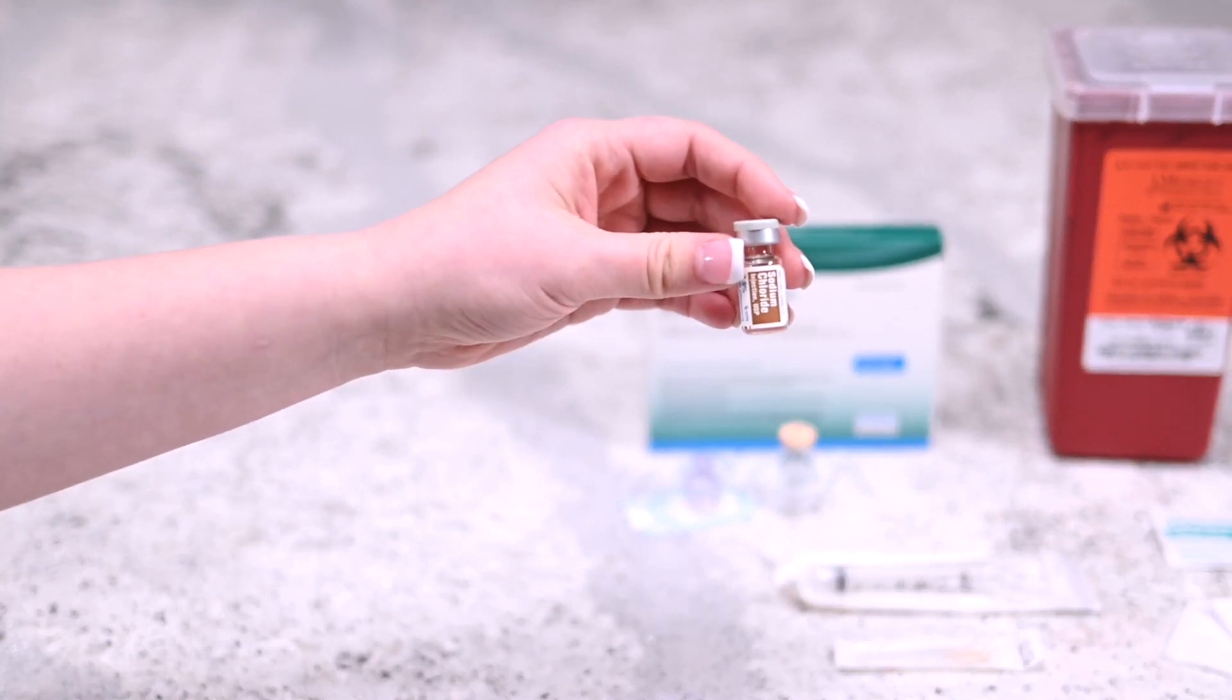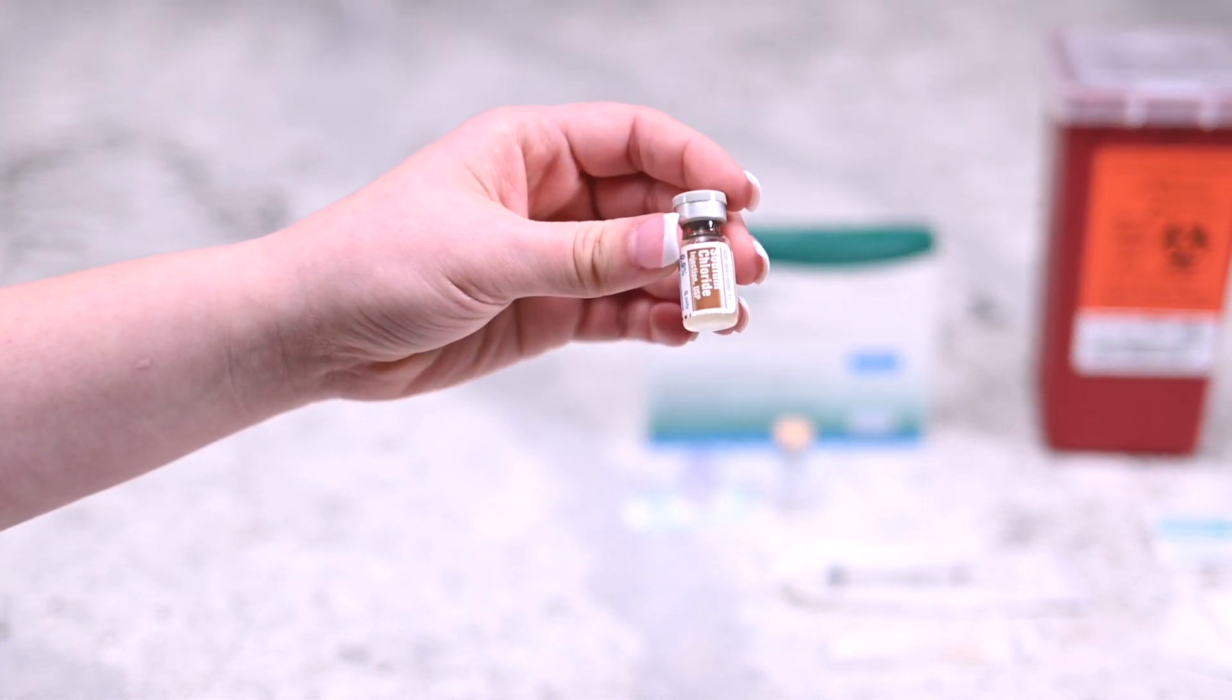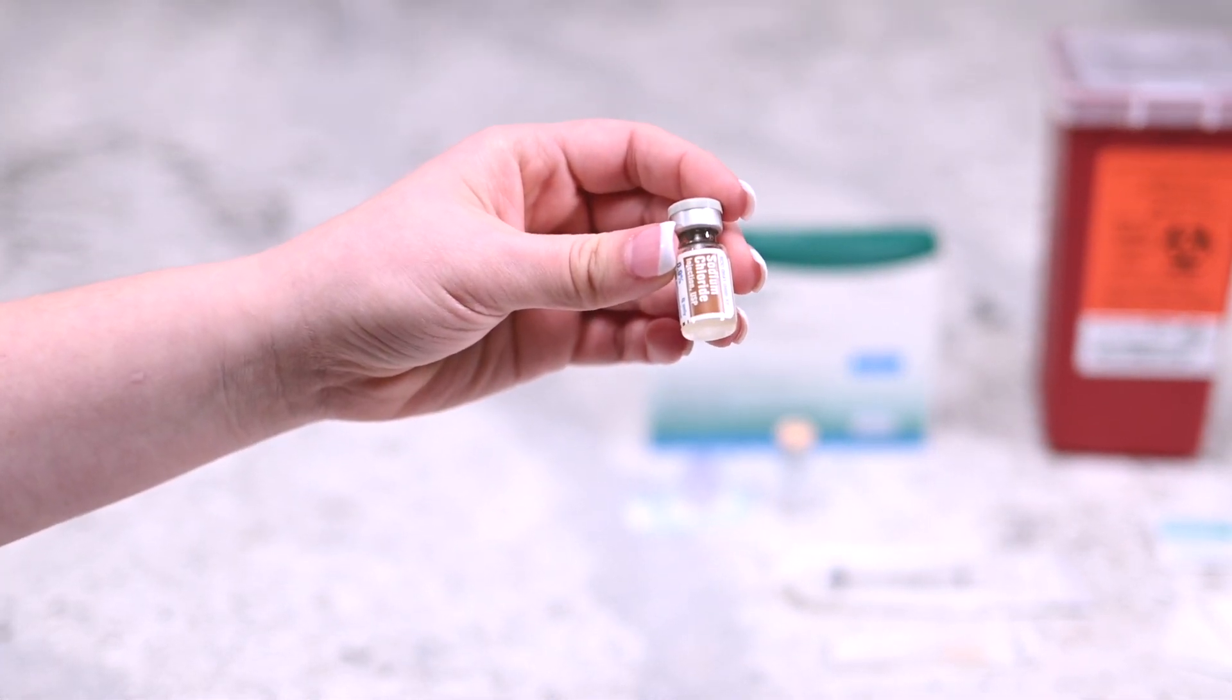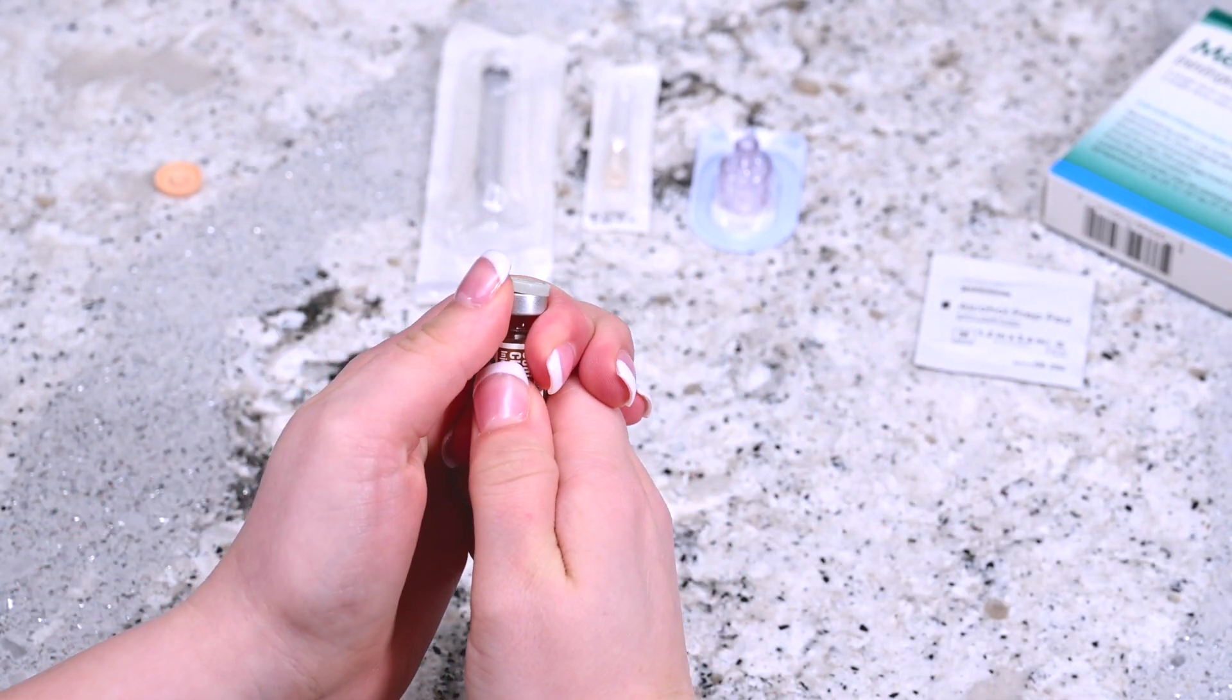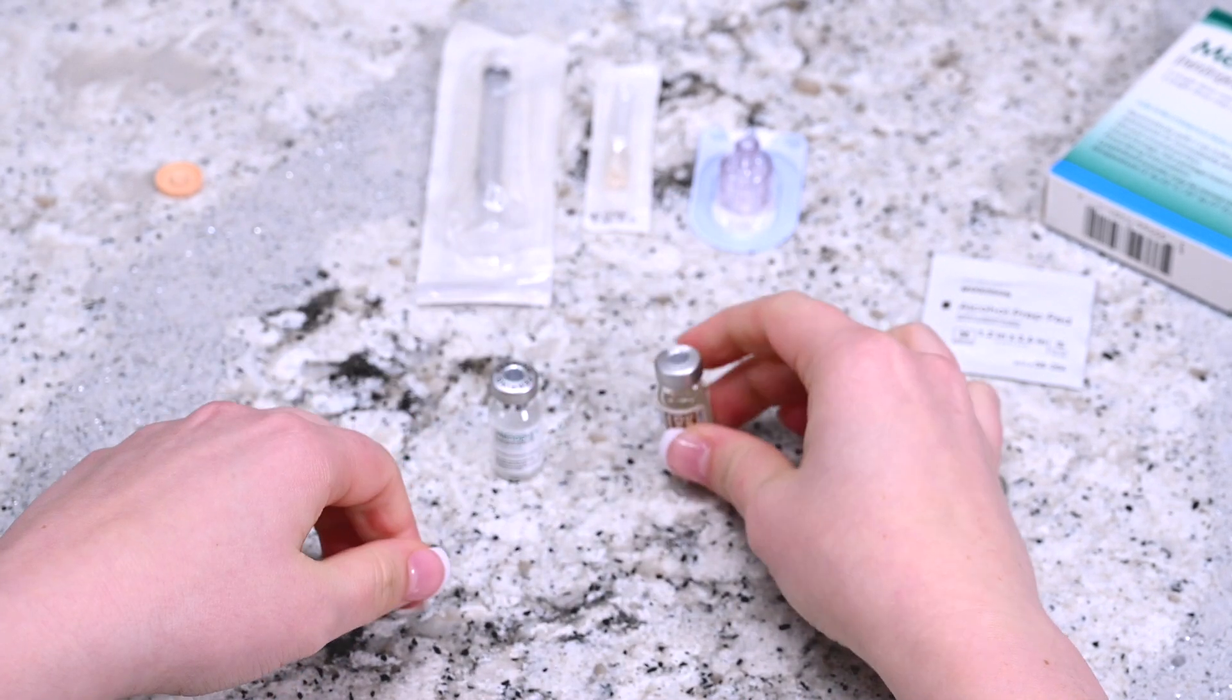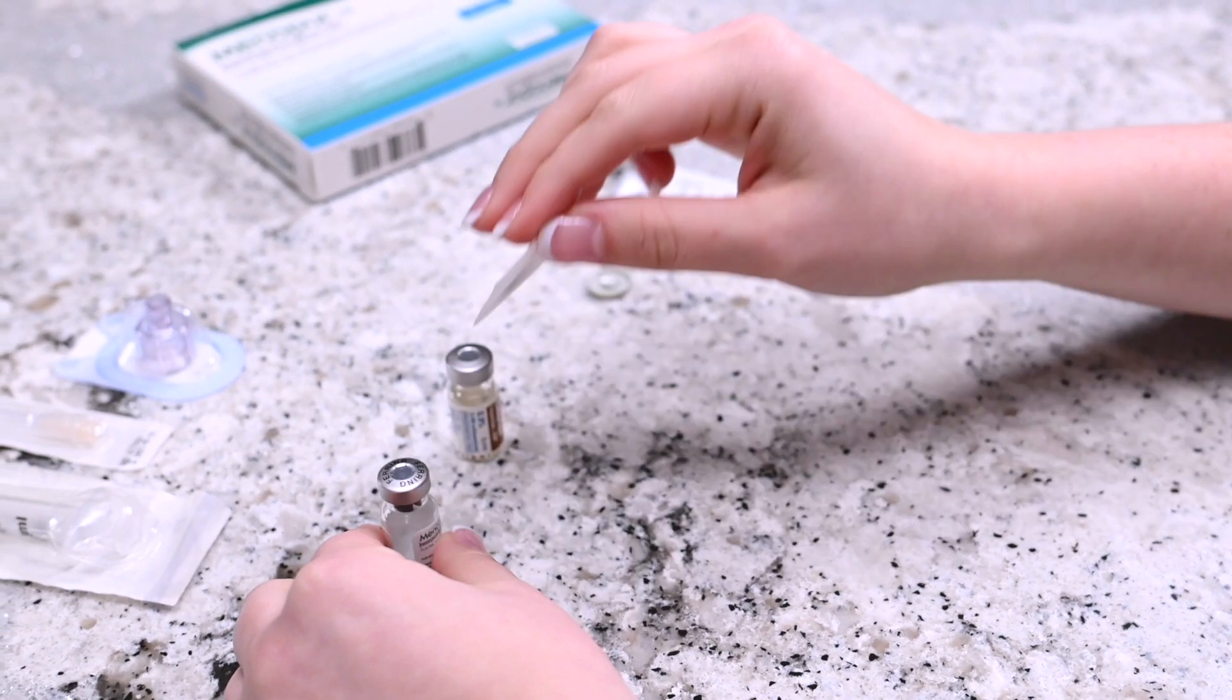Check to make sure that the vial of sterile diluent does not contain any free-floating particles. Remove the cap from the vial of Menopur powder and the vial of sterile diluent. Disinfect the top of the vials with an alcohol prep wipe.